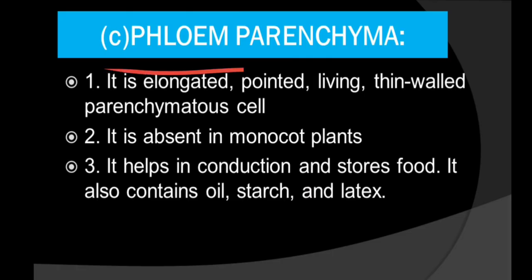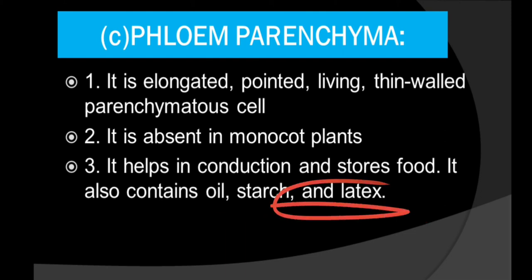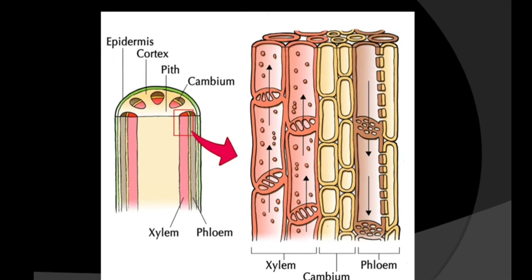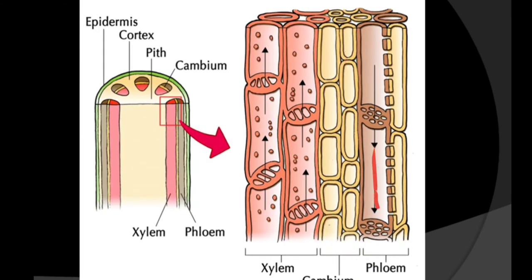Phloem parenchyma consists of elongated, pointed, living, thin-walled parenchyma cells. Their main function is to store food; they also contain oil, starch, and tannins. Phloem parenchyma is absent in monocot plants. In the diagram, you can see the xylem and the phloem clearly, with a cambium layer in between, and the sieve tubes and sieve plates visible.